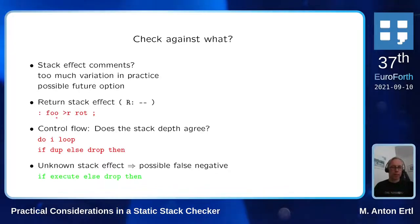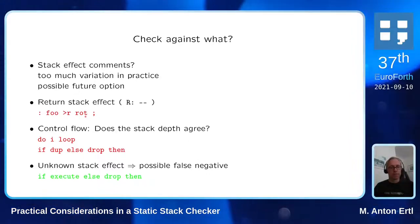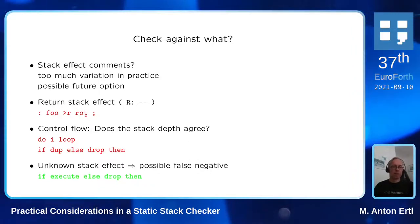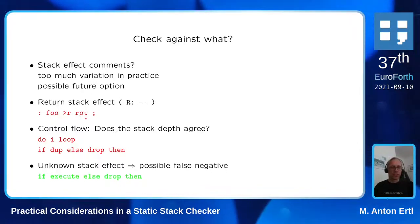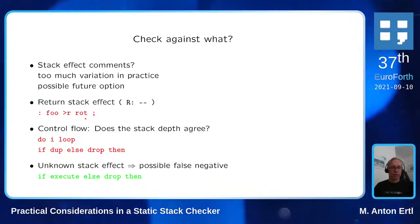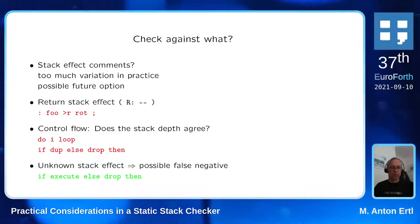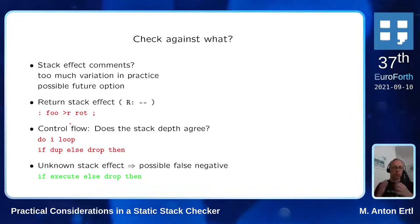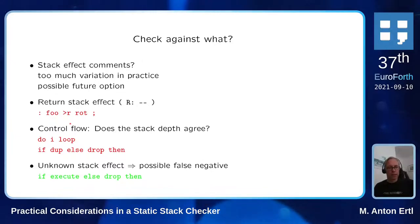If we have code where people push something on the return stack and then forget to pop it from the return stack, the checker will complain about that — shown here in red. We can also check what happens when two control flows meet: does the stack depth of the two paths agree? An example is the DO...I...LOOP construct, where the stack depth at the LOOP has to be the same as the stack depth right after the DO.